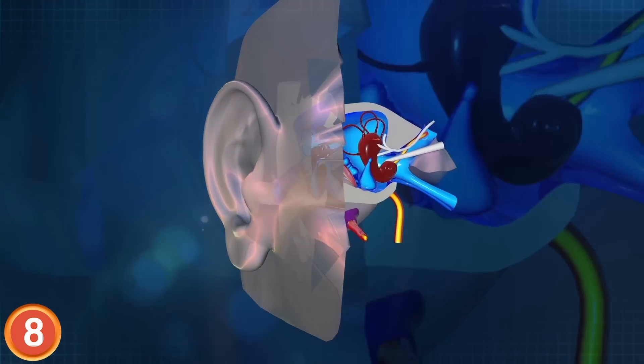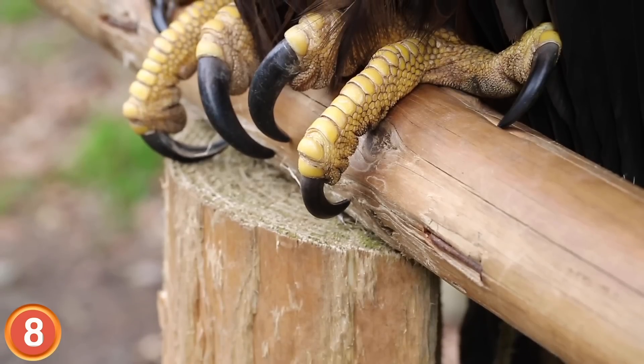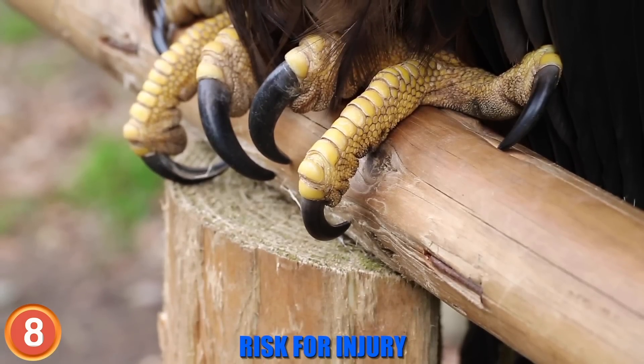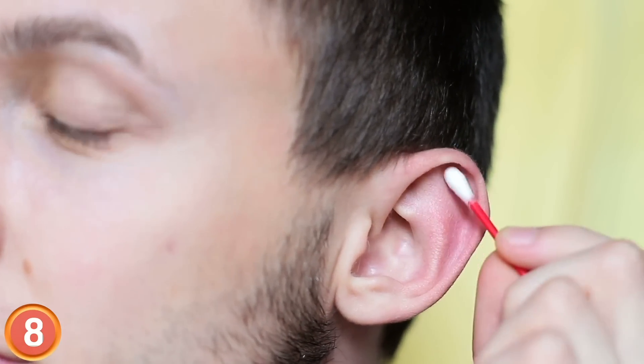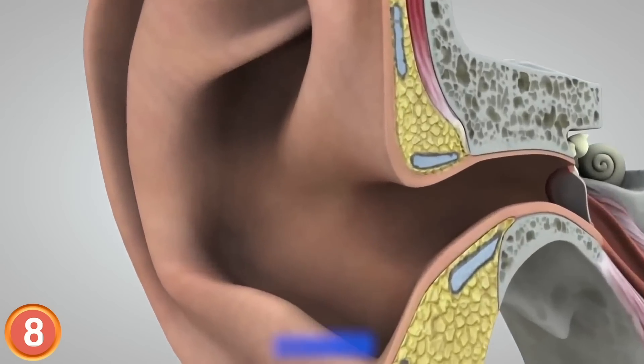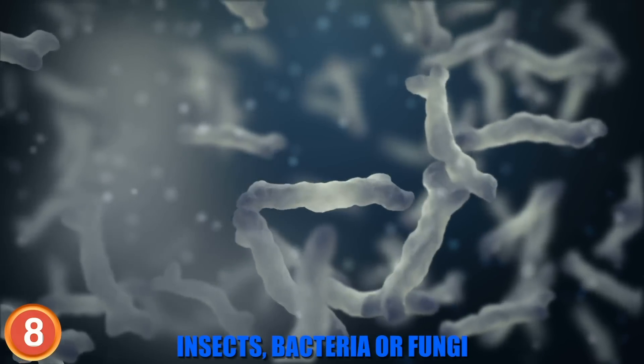That's mainly because it can be dangerous for the ear canals. And the longer your nail, the higher the risk of injury. Some medical professionals don't even recommend using Q-tips to clean the ear. What we know as earwax is actually called cerumen, a substance secreted in the ear canal that protects it from foreign elements such as insects, bacteria, or fungi.